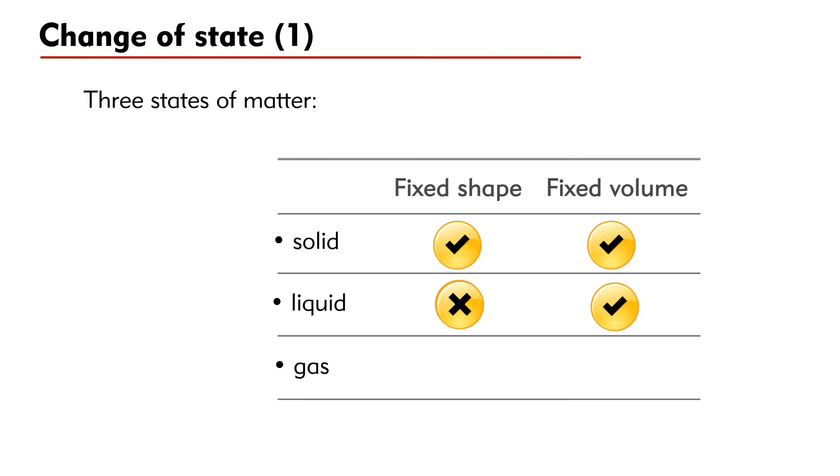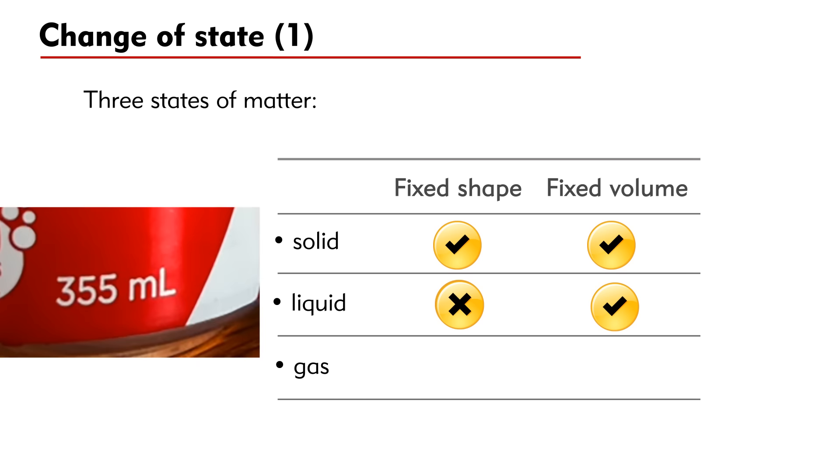The liquid does not have a fixed shape but it has a fixed volume. The shape of a liquid varies with the container. On the other hand, a standard can of Coca-Cola has a volume of 355 ml. Once the can is sealed, its volume will remain unchanged.